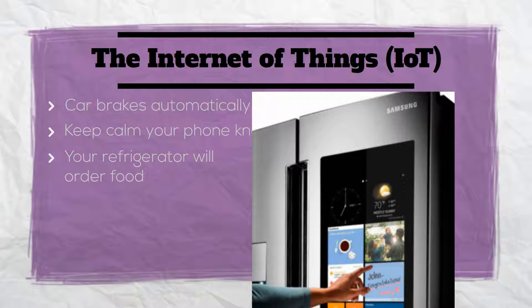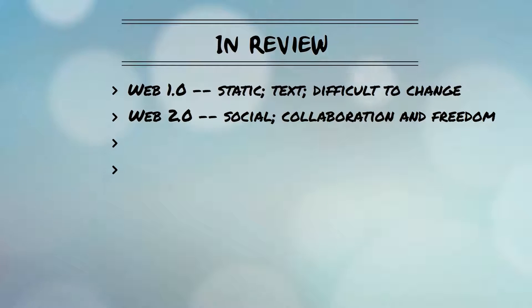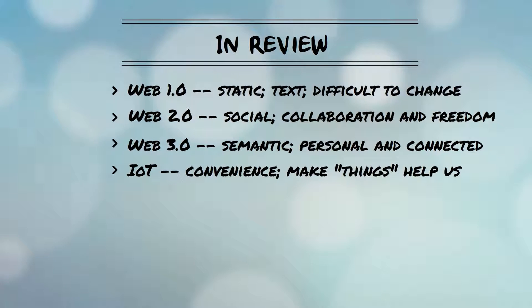The most notable change to the average user was from Web 1.0 to 2.0, but fortunately everything since has been absorbed by us normal users as just the Internet, without needing to know the background. In review: we can think of 1.0 as static because change requires specialty. Web 2.0 is all about collaboration and freedom. Web 3.0 is about personalization and connectedness, and the Internet of Things is about using technology to improve our convenience.